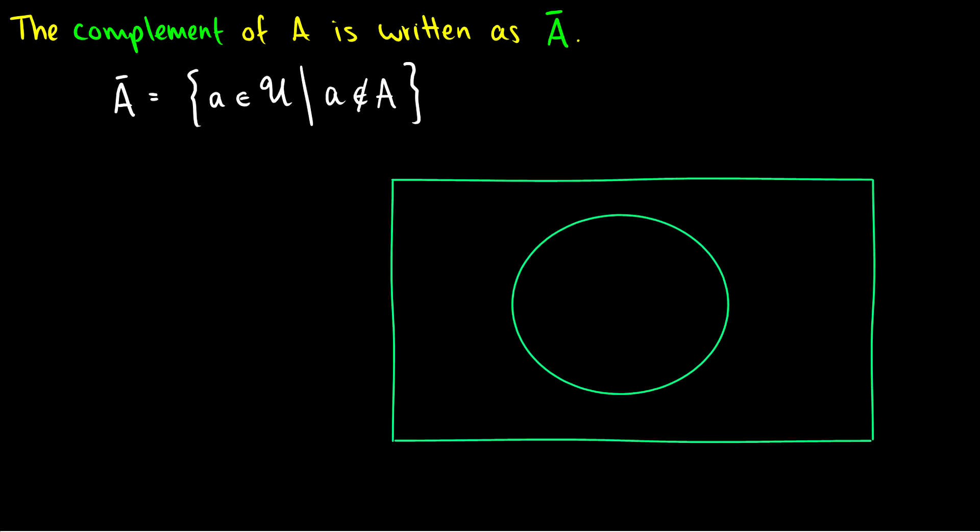So the first thing we can do is we can write the complement of A and that is written as A with a bar on top. You might also see it written as A with a little c or A prime and these are all complements.